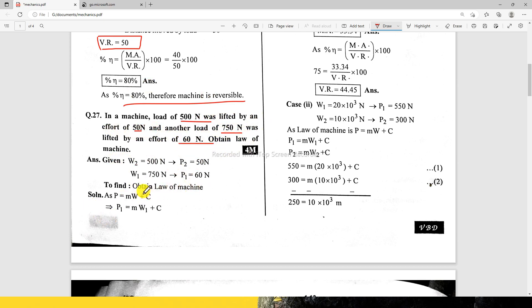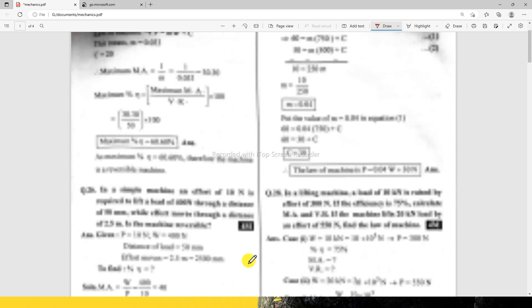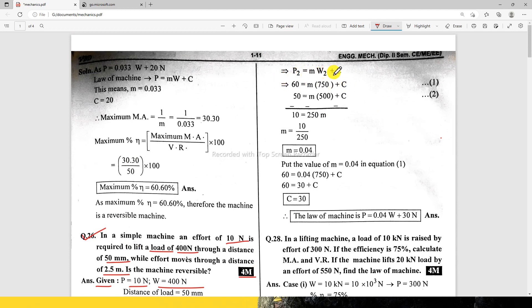Find the law of machine. Law of machine is P equals mW plus C. So P1 equals mW1 plus C, and P2 equals mW2 plus C. We will add values here. So after adding values and simplifying, we get m equals 0.04. Put the values in equation number 1, so C equals 30. Therefore law of machine is P equals 0.04W plus 30 Newton. So easy, this is the law of machine P equals 0.04W plus 30 Newton.